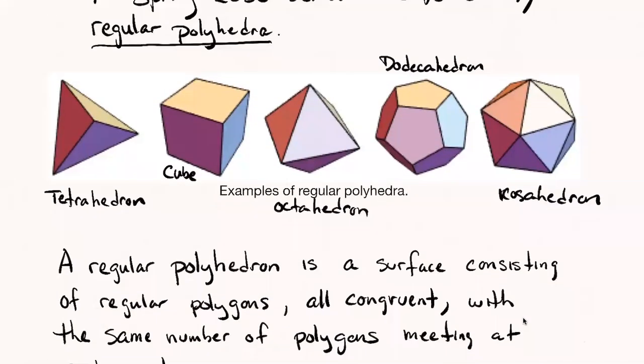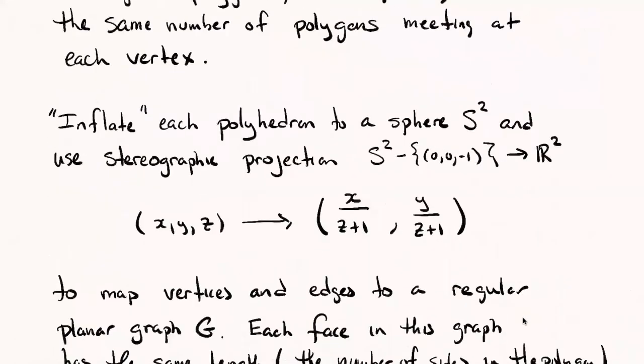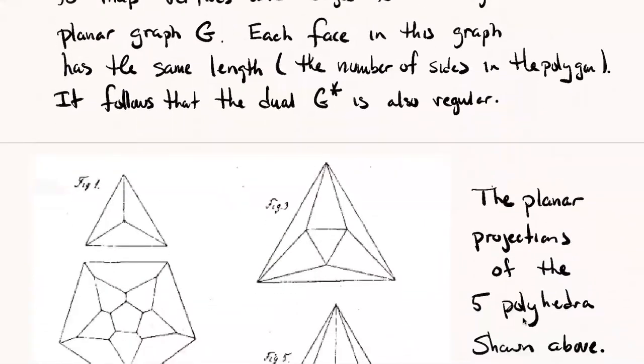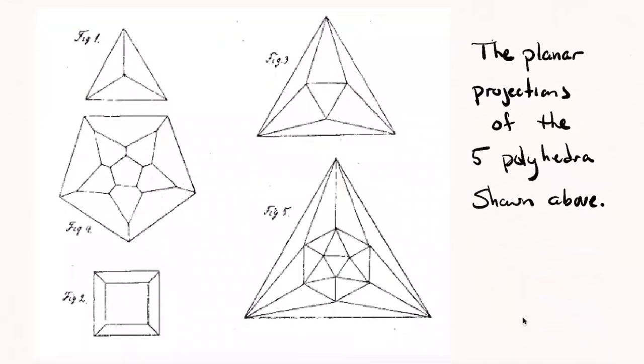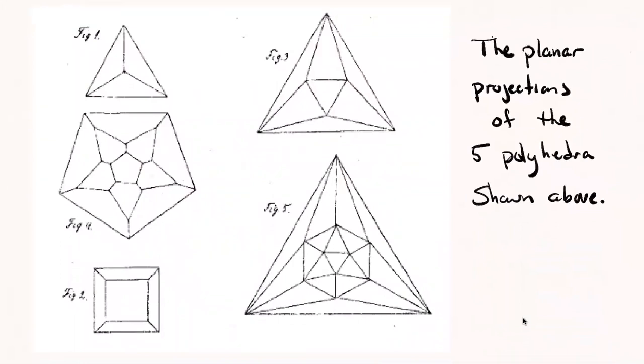It's the number of sides in the polygon. So if you did this to the tetrahedra above, when you look at its planar graph, you're going to have a planar graph where every one of the faces is going to be bounded by a three-cycle. If you do it with the cube, every one of the faces is going to be bounded by a four-cycle and so on. Let's take a look at what those graphs look like.